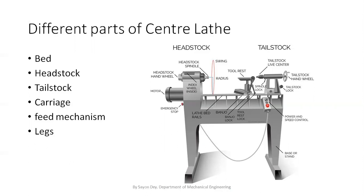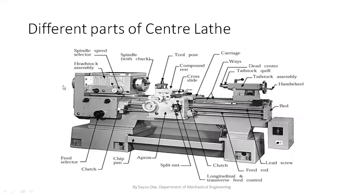Now I am coming again to my slide on different parts. In the picture we can see different types of parts. On the left-hand side, it is called the head stock. On the right-hand side, this is called the tail stock. The entire middle section is called the bed. In the upper side of the bed we can see the carriage. The two bottom parts are called legs, base, or stand. This is the entire picture of a lathe — you can see the different components or parts of the center lathe.